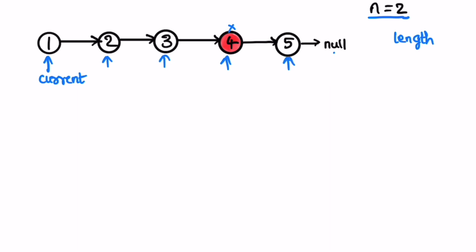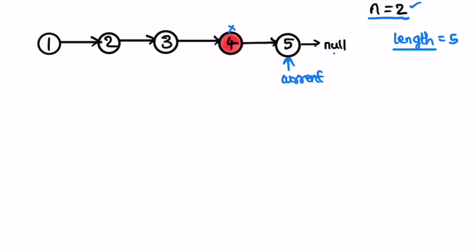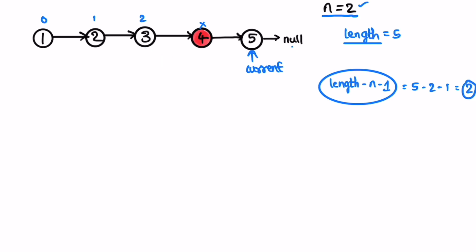We create a variable called length. Current iterates through all nodes and finally we get the length as 5. Now, using the length and n, we need to find the position of the node prior to the node we want to delete. The formula is: iterate from the start until length minus n minus 1. With length equal to 5 and n equal to 2, that gives 5 - 2 - 1 = 2, so we iterate indices 0, 1, 2 to reach the predecessor node.